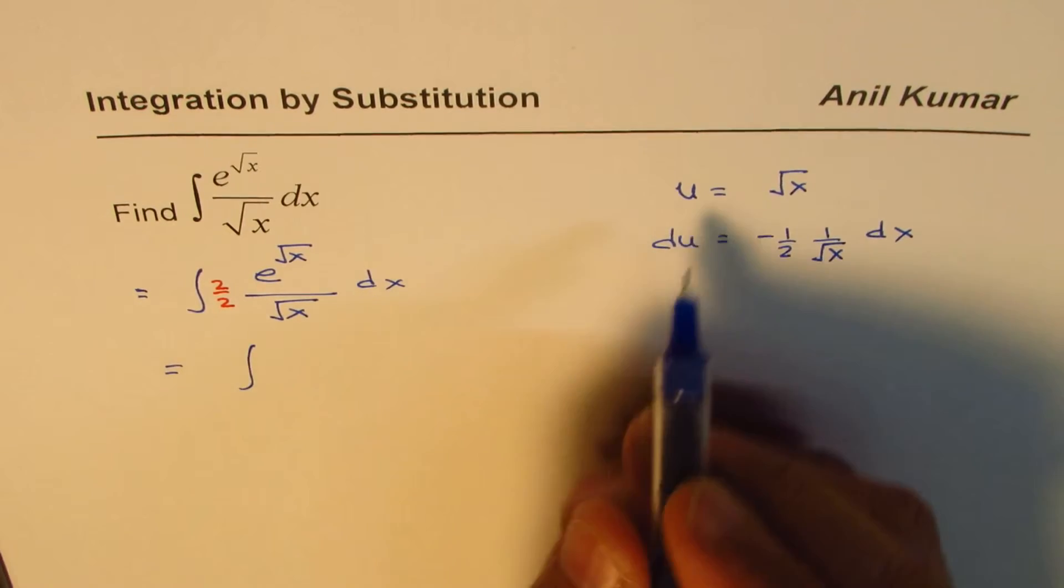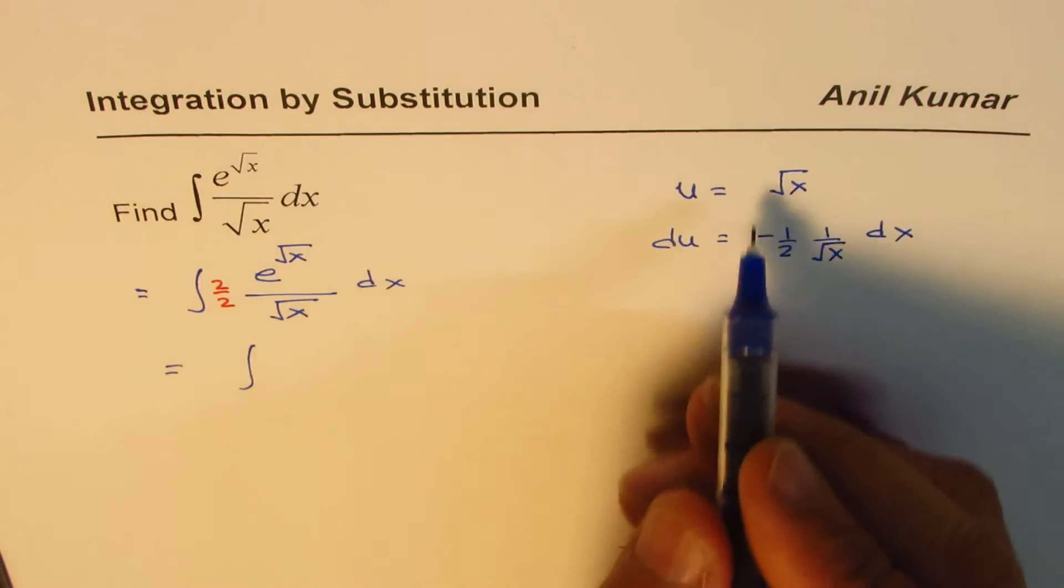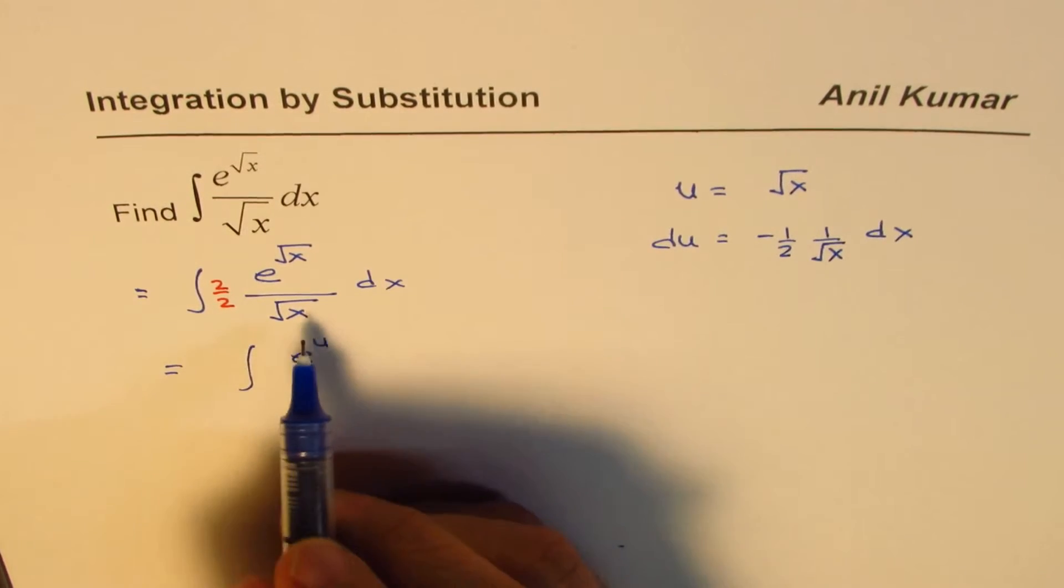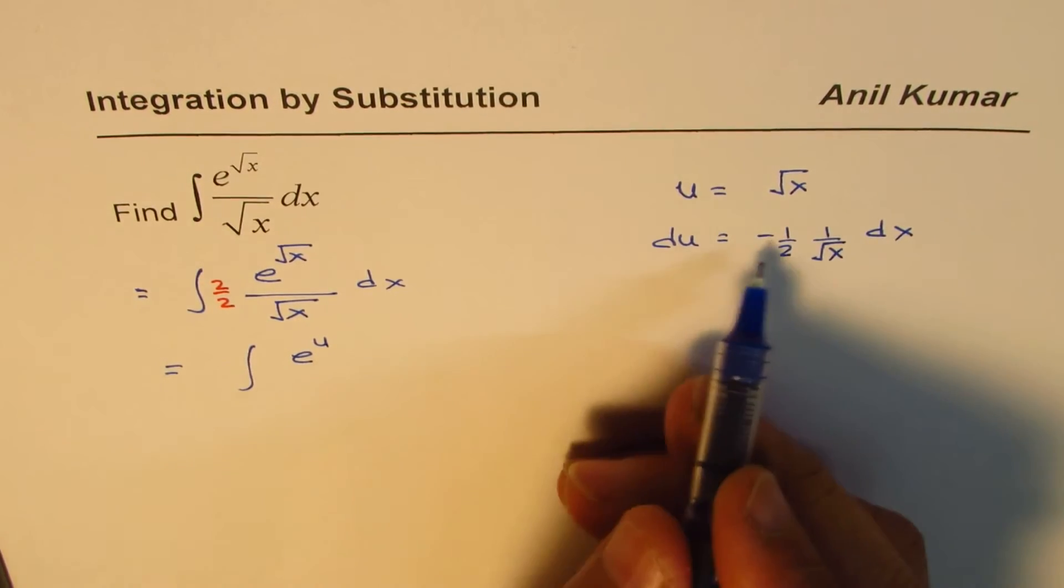Now let's substitute. So what we get here is, instead of e to the power of square root x, we'll write e to the power of u. And then we have 1 over 2 square root x, this part. Negative, I'm writing negative outside.